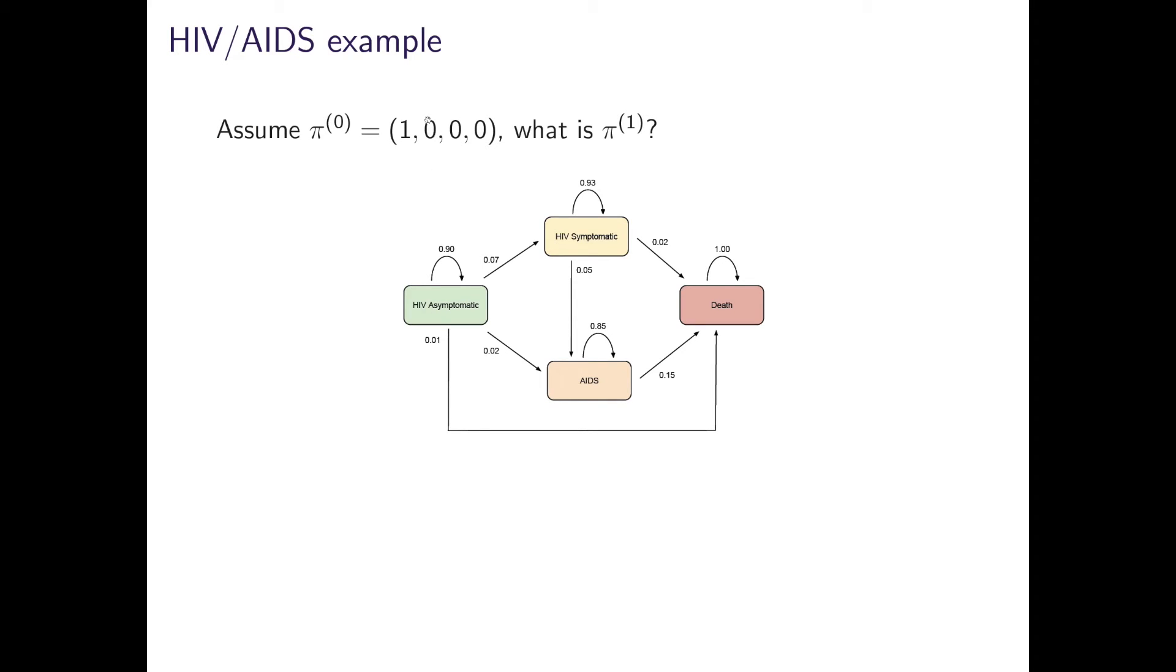Back to our example. Initially, all patients with HIV in our model must enter the disease in state 1, which is asymptomatic. So what is the probability distribution of being in each state after one time step, or equivalently one year here? Well, this is fairly trivial, since it is just our one-step transition probabilities themselves by definition. But more generally, after n time steps, this can be computed as the initial vector at time zero, multiplied by a one-step-ahead transition probability matrix raised to the power n.